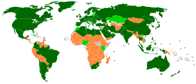The International Electrotechnical Commission is an international standards organization that prepares and publishes international standards for all electrical, electronic and related technologies, collectively known as "Electrotechnology". IEC standards cover a vast range of technologies from power generation, transmission and distribution to home appliances and office equipment, semiconductors, fiber optics, batteries, solar energy, nanotechnology and marine energy, as well as many others.